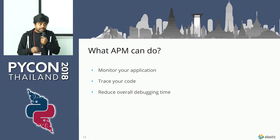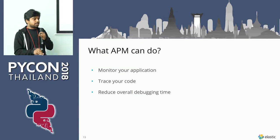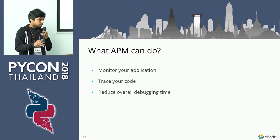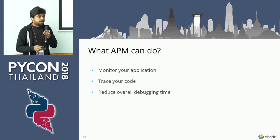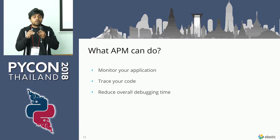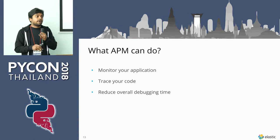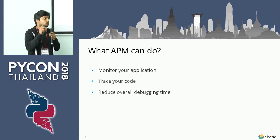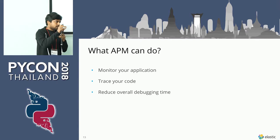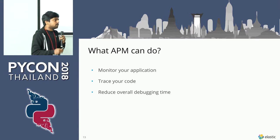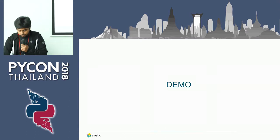What APM can do: it can help you monitor your application and what's happening inside, trace your code, and reduce overall debugging time because it finds errors down to the code point. You can see what's happening in your code.